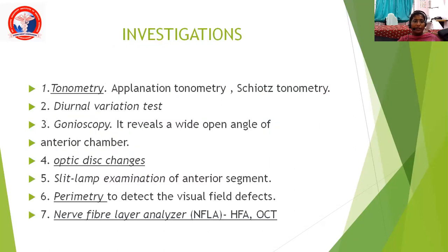Coming to investigations: first is tonometry — applanation tonometry and Schiotz tonometry. Second is the diurnal variation test. Third is gonioscopy and ophthalmoscopy, which reveals a wide open angle of the anterior chamber and optic disc changes. Slit lamp examination of the anterior segment is also done. Then perimetry with the Humphrey Field Analyzer detects visual field defects, and nerve fiber analyzers — HFA and OCT — are the recent tools.